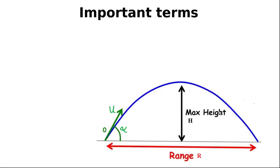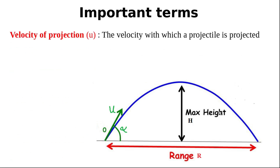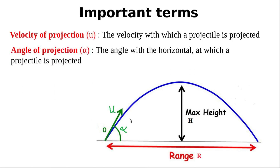Now let's discuss different terms in projectile motion. The first one is velocity of projection, u — it is the velocity with which a projectile is projected. In this figure you can see a particle is projected from this point with an initial velocity u. The next term is angle of projection, alpha — it is the angle with the horizontal at which a projectile is projected. The particle is projected at an angle alpha with the horizontal.